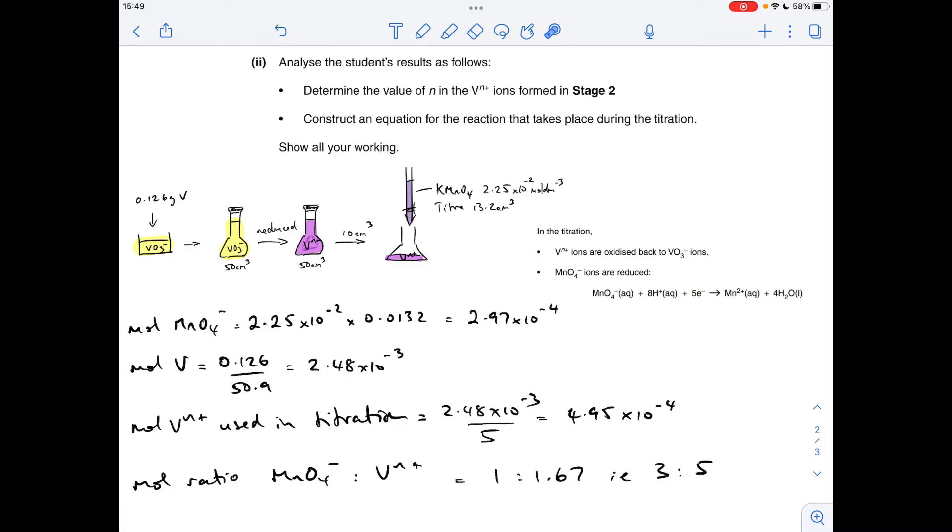So those 15 electrons must be being supplied by this half equation. And we know that for the three moles of MnO₄⁻ ions, there's five moles of Vⁿ⁺. 15 electrons need to be supplied. So therefore, each mole of Vⁿ⁺ must be supplying three electrons.